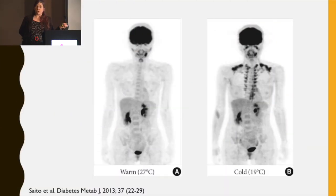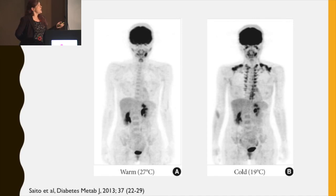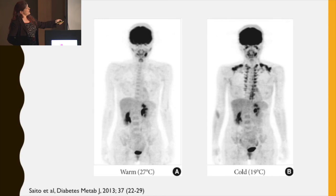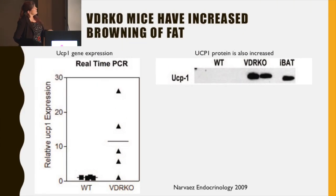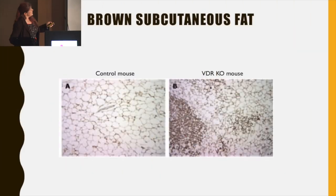This scan done at 27 degrees shows that the brown fat is not activated. But if you take the same person after exposing them to 19 degree temperatures for a few hours, you can see avid fluorodeoxyglucose uptake in the supraclavicular region and down the paraspinal region — and this acts to produce heat. The vitamin D receptor null mice have increased browning of fat, with increased UCP1 expression in subcutaneous fat. The Western blot shows a lot more UCP1 protein in the knockouts than in wild-type mice, and histology of the subcutaneous fat stained for UCP1 shows smaller, multilocular cells compared to controls.